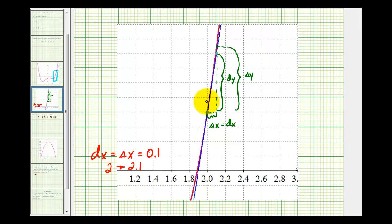Looking at our sketch again, delta x is equal to dx. The change in x for the function and the tangent line are the same, but notice as x increases by zero point one, or at the x value of two point one, there's a slight difference between the change in y of the tangent line represented by dy and the change in y of the function represented by delta y.